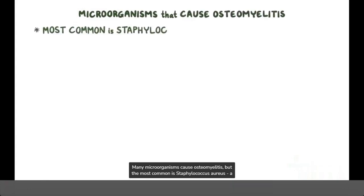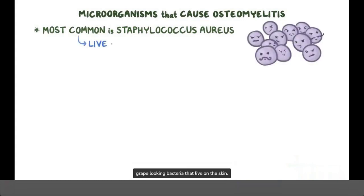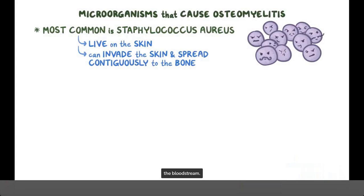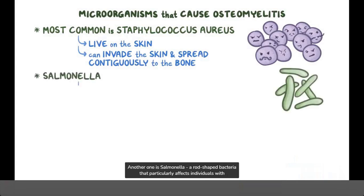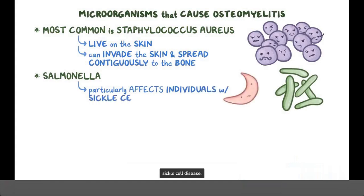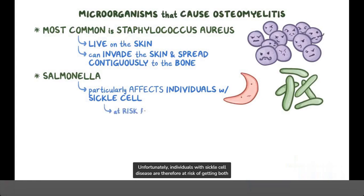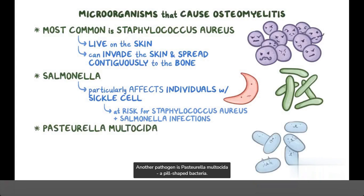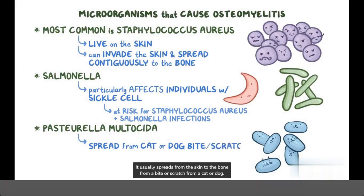Many microorganisms cause osteomyelitis, but the most common is Staphylococcus aureus, a grape-looking bacteria that lives on the skin. It can invade the skin and spread contiguously to the bone, or reach the bone through the bloodstream. Another one is Salmonella, a rod-shaped bacteria that particularly affects individuals with sickle cell disease, who are therefore at risk of both Staphylococcus aureus and Salmonella infections. Another pathogen is Pasteurella multocida, a pill-shaped bacteria that usually spreads from the skin to the bone from a bite or scratch from a cat or dog.